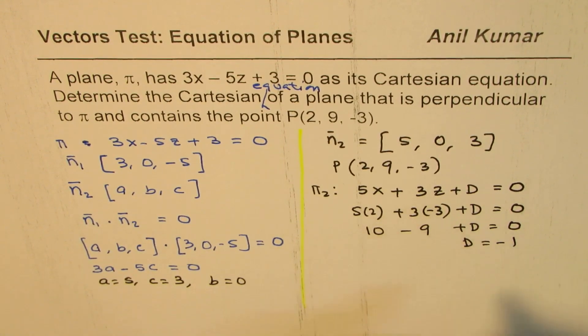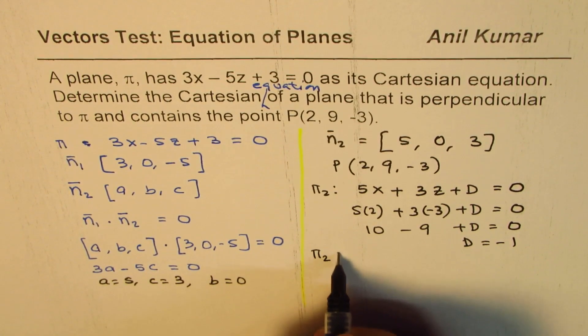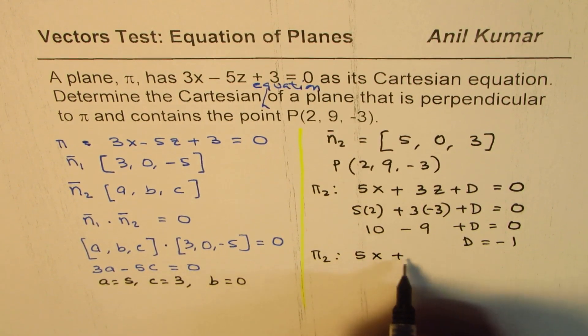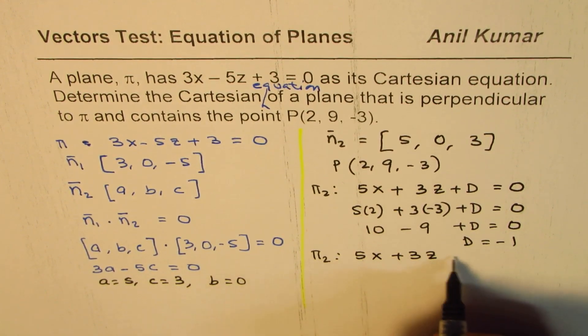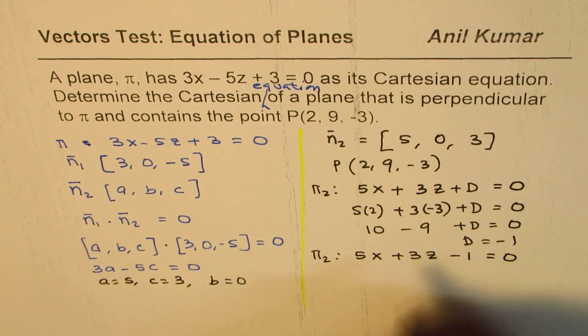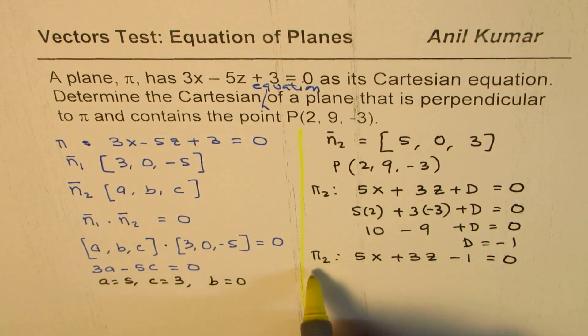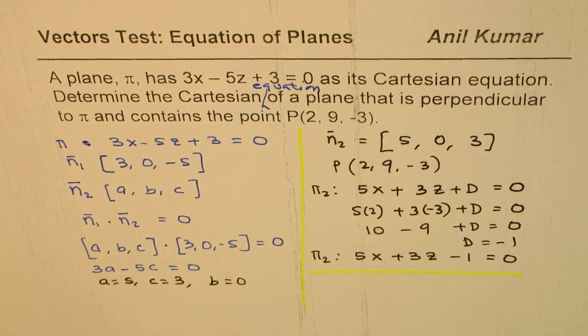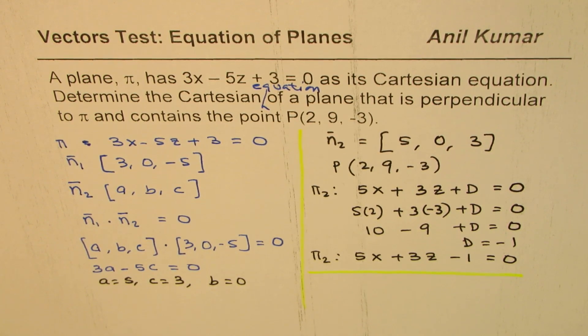Therefore the equation for the plane should be 5x + 3z - 1 = 0. That is how you can find the equation of a plane perpendicular to a given plane and also containing a given point. I'm Anil Kumar and I hope that helps. Feel free to share your comments and questions. Thank you for watching, all the best.